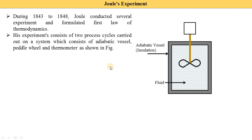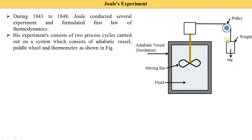The second device is the paddle wheel. There is a paddle wheel, a shaft, and a drum. It is also called a string fan — because it looks like a fan and this fan is rotated by using strings. The string is wound on the drum and passed over a pulley. From the pulley, the other end of the string is connected to a weight equal to mg. A thermometer is placed inside the vessel to measure the temperature of the fluid.